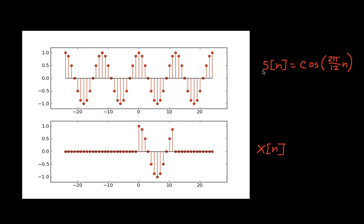I've drawn just a sample waveform here, S of n, which is a cosine. Mathematically, this cosine goes forever — from n equals minus infinity up to n equals positive infinity. In the real world, however, I can't actually have a cosine that goes forever, and in most applications where we're doing some sort of processing on a signal, we divide the signal into blocks.